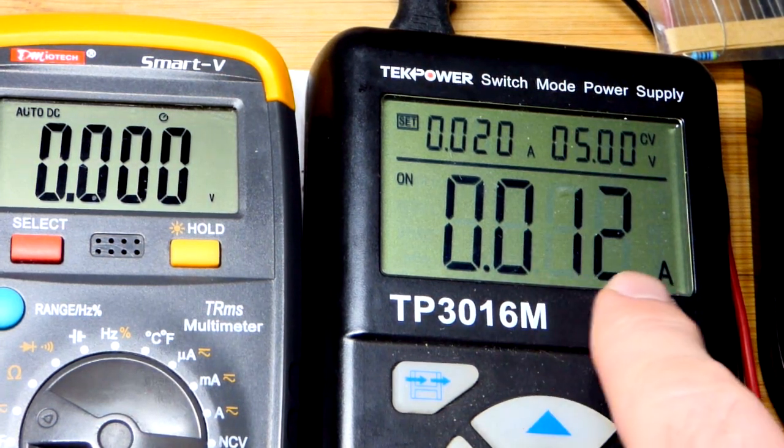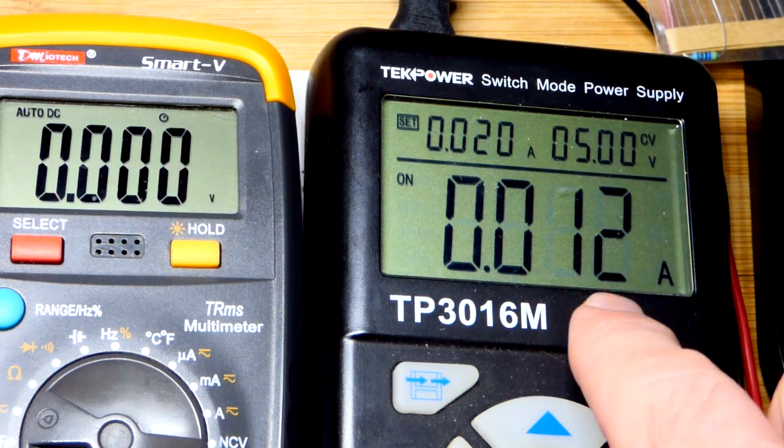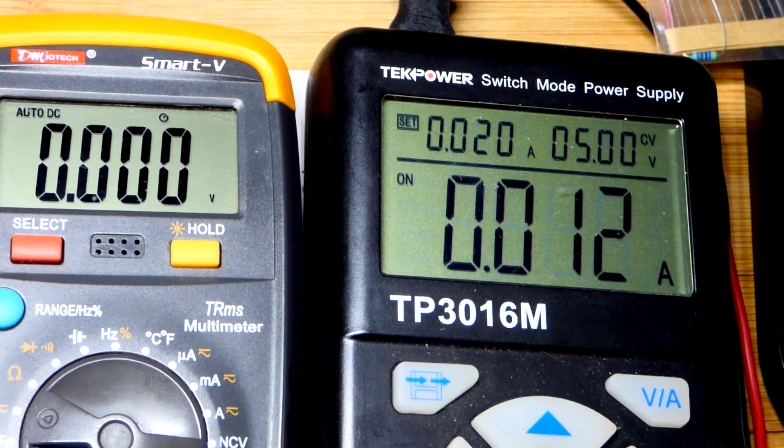It says 12 milliamps of current there, 0.012 amps. But this is usually about a milliamp or two off, so we'll measure the current with the multimeter.